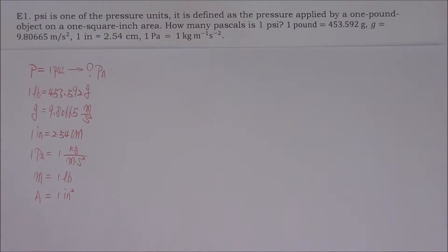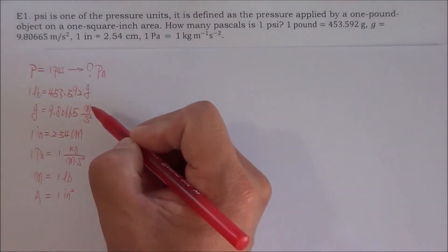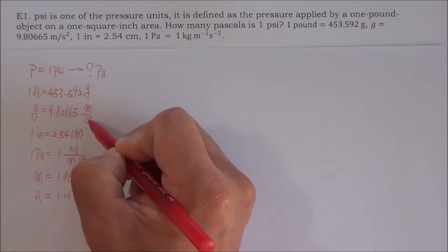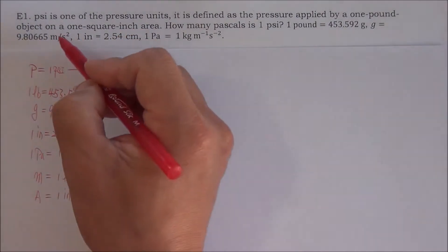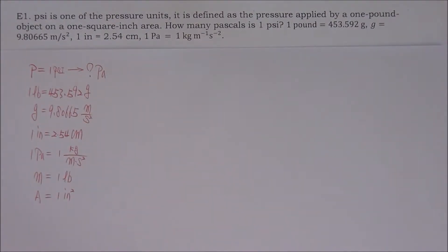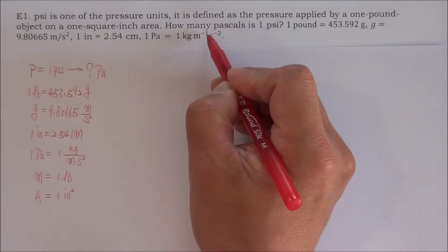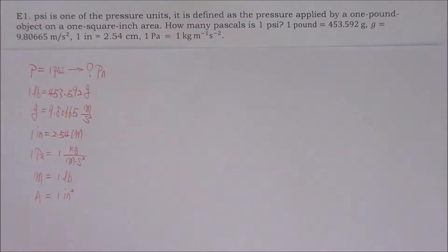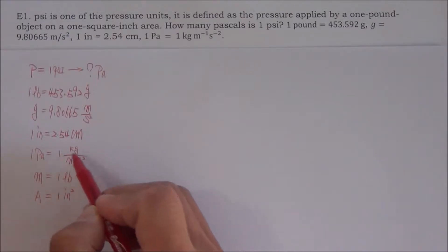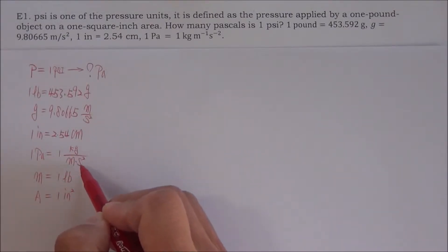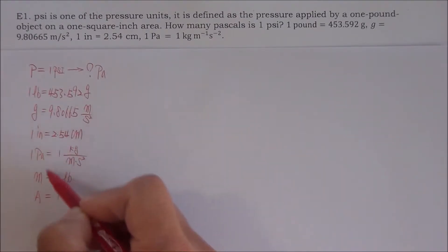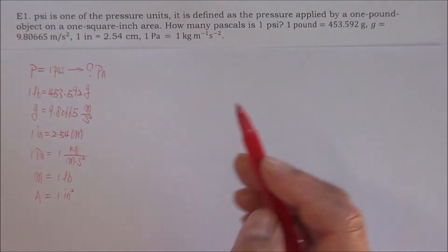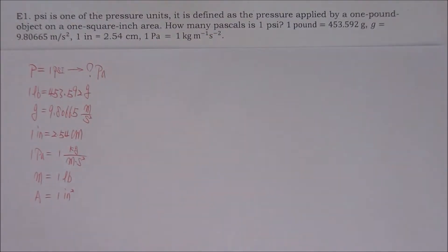This is the summary of our problem. I want you to pay attention to two things. The first thing is: I put 'meter over second squared' instead of 'meter per second squared' — I put the slash into fraction format because this will be easier for us to cancel units correctly. I also put one kilogram·meter to the negative one power·second to the negative two power into fraction format: one kilogram over meter·second squared. A fraction format is better than a slash format or a negative-power format.